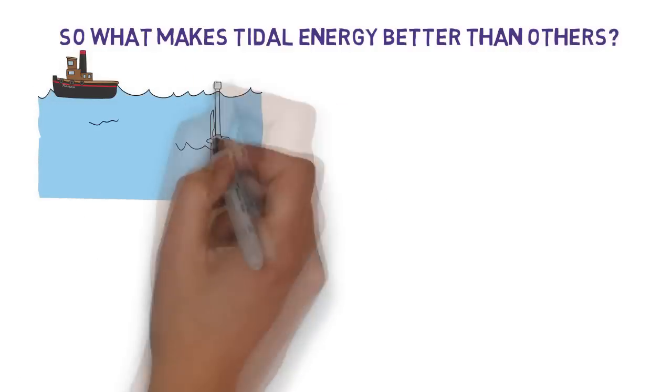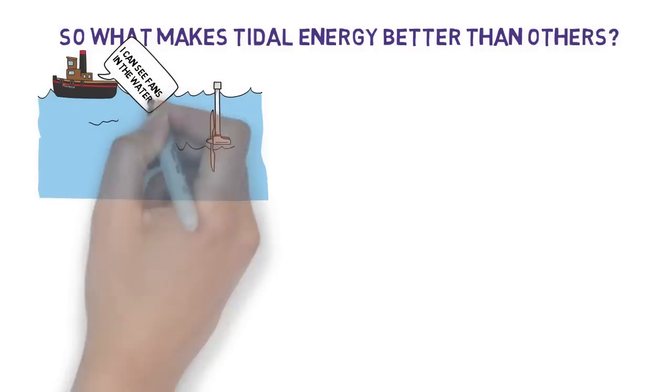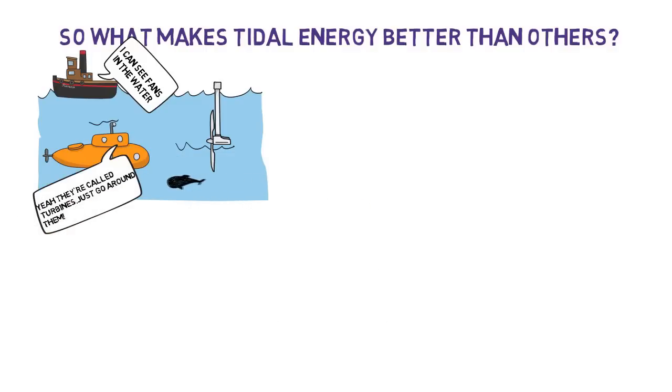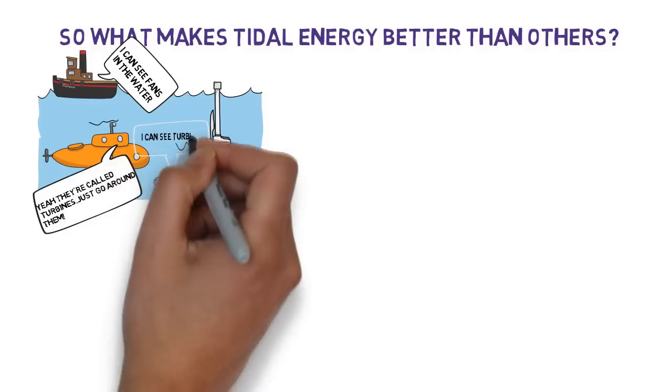For one thing, it creates more energy and allows ships to move around easily without colliding with the turbines. Turbine blades also turn slowly which helps marine life avoid getting caught in the system.